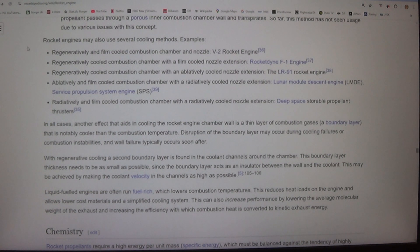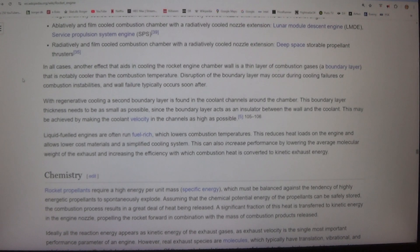Rocket engines may also use several cooling methods. Examples: One, regeneratively and film-cooled combustion chamber and nozzle - V-2 rocket engine. Two, regeneratively cooled combustion chamber with a film-cooled nozzle extension - Rocketdyne F-1 engine. Three, regeneratively cooled combustion chamber with an ablatively cooled nozzle extension - the LR-91 rocket engine. Four, ablatively and film-cooled combustion chamber with a radiatively cooled nozzle extension - Lunar Module Descent Engine (LMDE), Service Propulsion System engine (SPS). Five, radiatively and film-cooled combustion chamber with a radiatively cooled nozzle extension - deep space storable propellant thrusters.